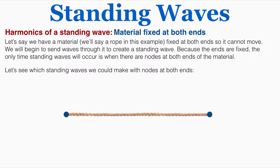Let's say that we have a material fixed at both ends so that it can't move. We'll begin to send waves through it to create a standing wave. Because the ends are fixed they can't move, the only time standing waves will occur is when there are nodes at both ends of the material, because nodes are places on the standing wave that do not move.